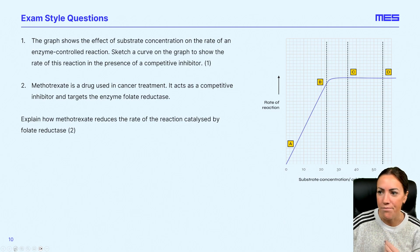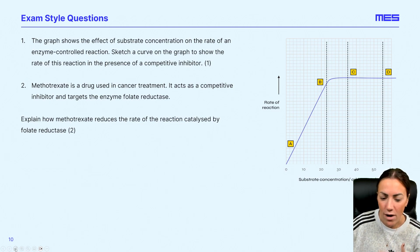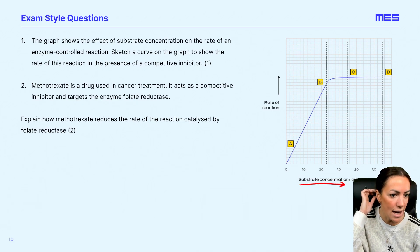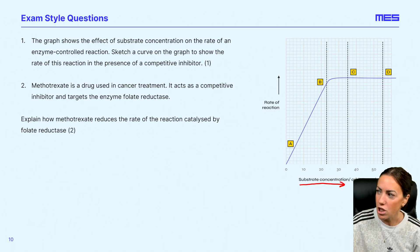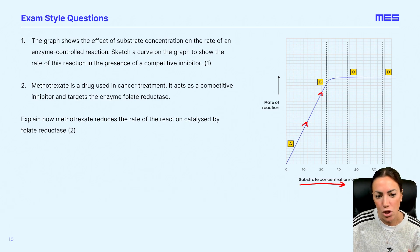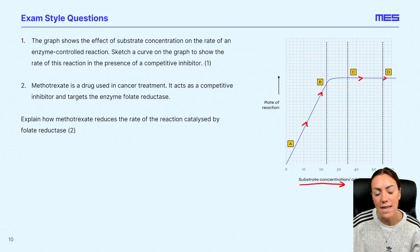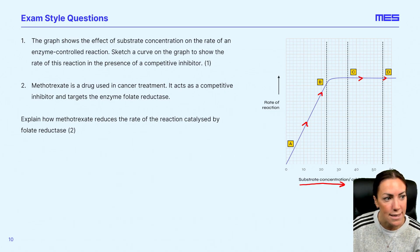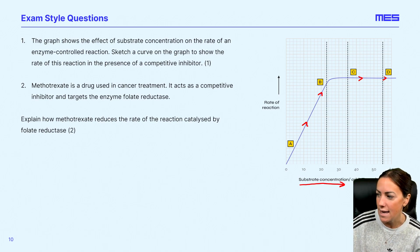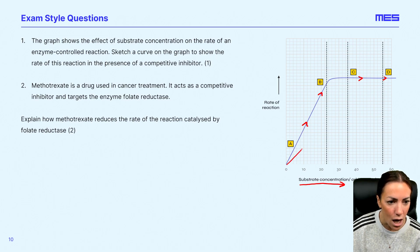Let's have a look at a question linked to this. The graph shows the effect of substrate concentration on the rate of an enzyme-controlled reaction. We've got a line on the graph showing the rate increases as we add more substrate because more enzyme substrate complexes form, and eventually it levels off because the enzyme concentration is the limiting factor. Can we sketch a curve on the graph to show the rate of reaction in the presence of a competitive inhibitor? We need to draw a line below the original line.